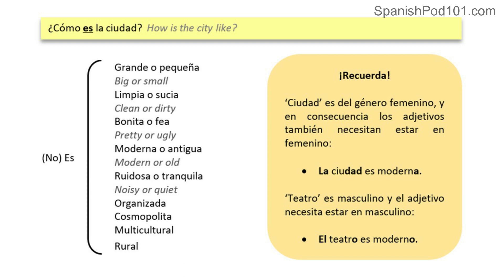You can also ask questions like: ¿Cómo es la ciudad? ¿Es grande o pequeña? ¿Es limpia o sucia? ¿Es bonita o fea? As you can see, you can use this vocabulary to ask more questions about the city — is it big or small? Is it clean or dirty? Is it pretty or ugly?